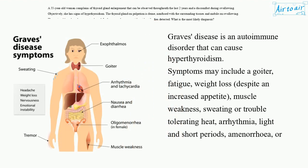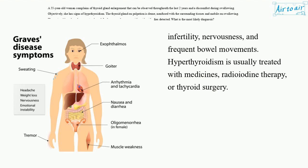Graves' disease is an autoimmune disorder that can cause hyperthyroidism. Symptoms may include a goiter, fatigue, weight loss despite an increased appetite, muscle weakness, sweating or trouble tolerating heat, arrhythmia, light and short periods, amenorrhea, or infertility, nervousness, and frequent bowel movements. Hyperthyroidism is usually treated with medicines, radioiodine therapy, or thyroid surgery.